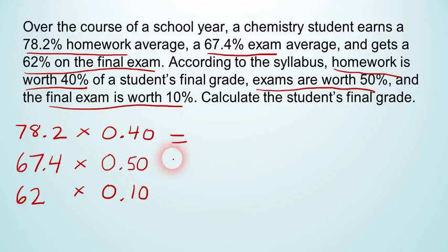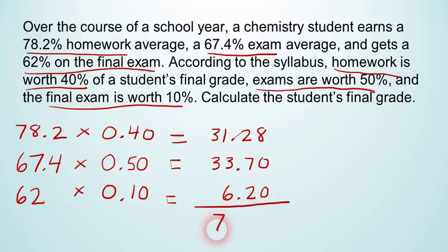So we multiply these values across, and the first product, according to the calculator, is about 31.28, and then the second product is about 33.70, and then the third product is 6.20. We take those three products and add them together to get the final answer. And according to my calculator, the answer is 71.18. So the student's score at the end of the year is 71.18, which under most grading scales would be a passing grade.